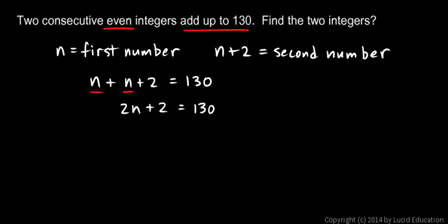And then I continue to solve the equation. I subtract 2 from each side and the plus 2 and the minus 2 cancel out.